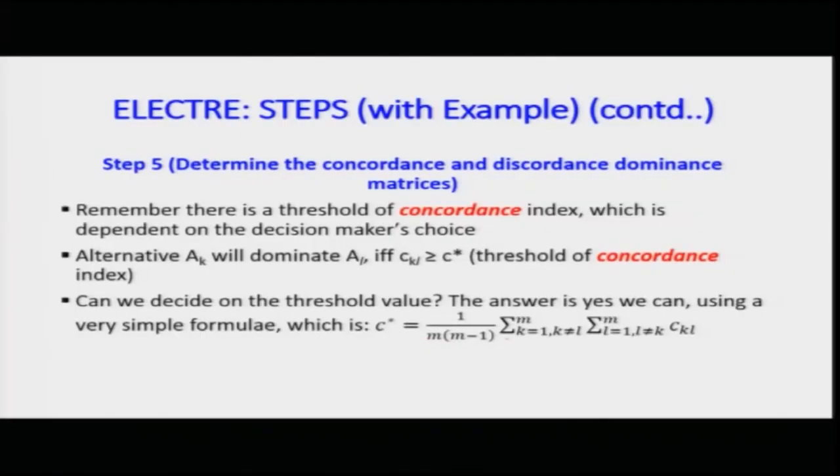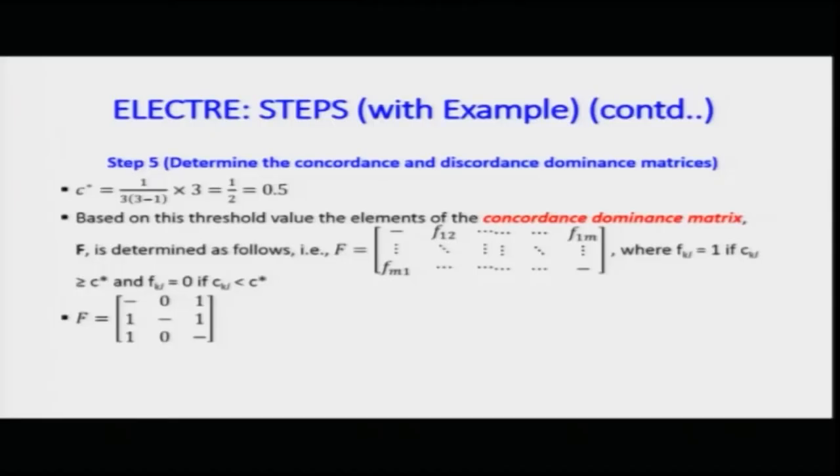You multiply by m times (m minus 1) and sum all the c_kl values comparing a_k and a_l across all criteria. C* comes out to be 0.5. Based on that, I formulate the concordance dominance matrix: if a value is greater than C*, I assign 1; if less than C*, I assign 0.